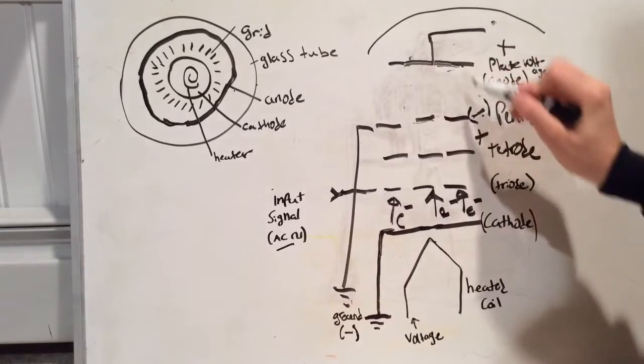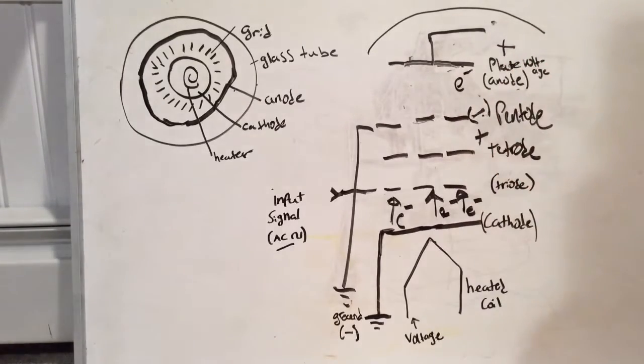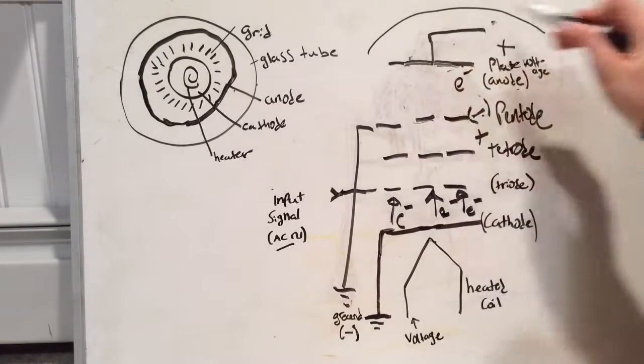Now it's negative because it's a suppressor grid suppressing the electrons that want to come back out. So it's going to repel because they're both negative. Electrons are negative. The pentode suppressor grid is negative. It's going to repel them right back into the anode.